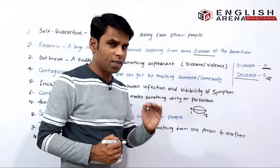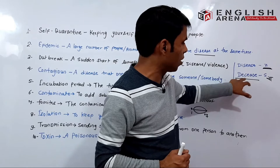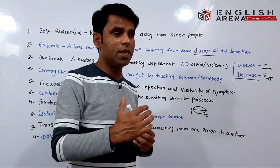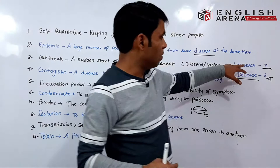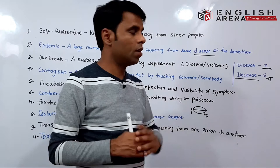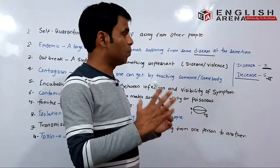Now the word 'disease' — this word is pronounced as 'disease.' There are two words: one is 'disease' and one is 'decease.' If I talk about 'disease,' iska matlab hota hai 'rog.' And 'decease' — iska matlab hota hai the death of a person, matlab kisi insaan ki maut. In the first word, 'disease,' there is a 'z' sound — 'zzz.' In the second word, 'decease,' there is an 's' sound — 'sss.' So be careful when you pronounce these words.